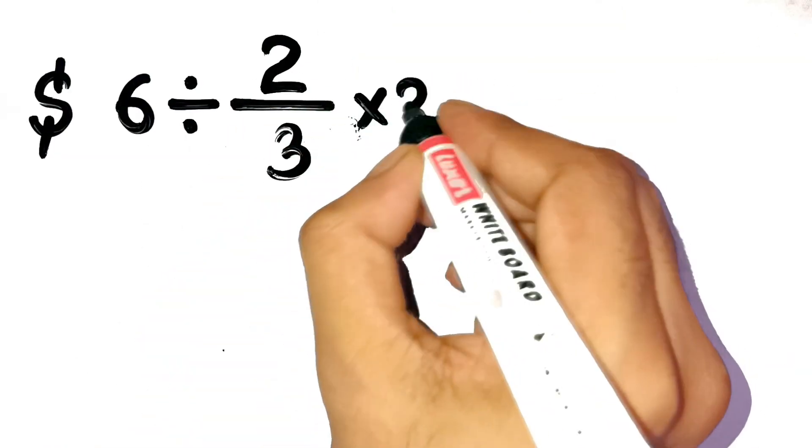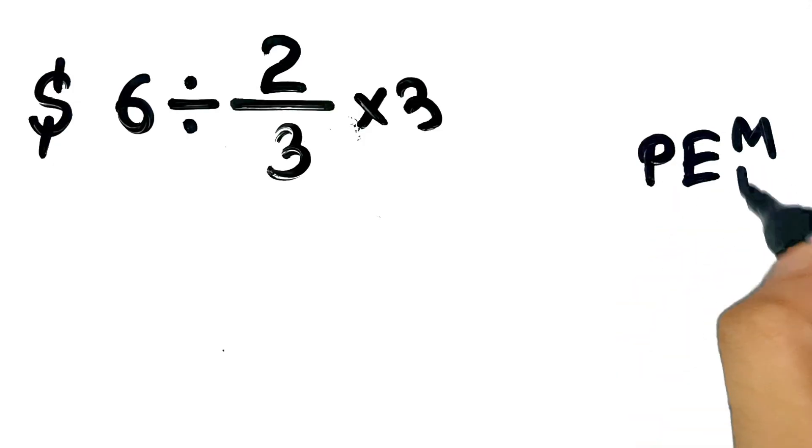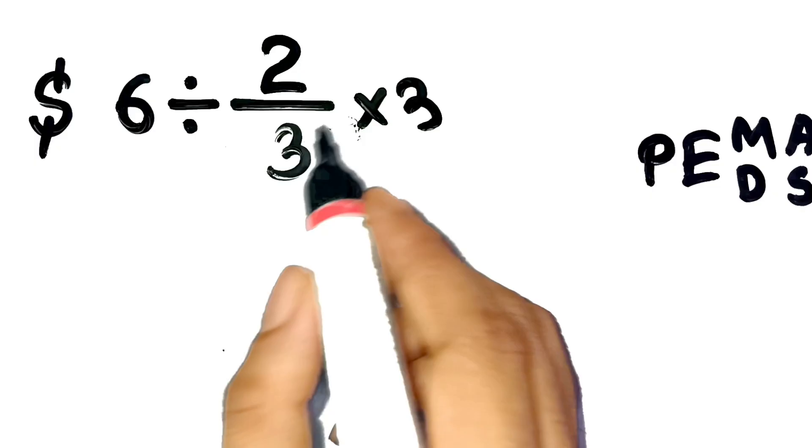Now, according to PEMDAS, that's parentheses, exponents, multiplication, division, addition, and subtraction, we handle parentheses first. Here, we already have the fraction 2 thirds, which stays as it is.